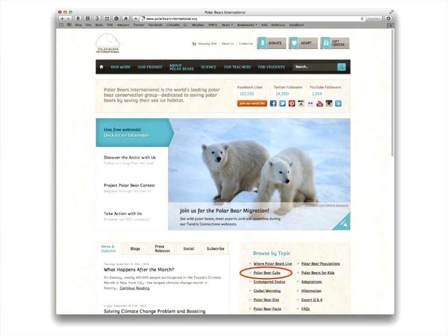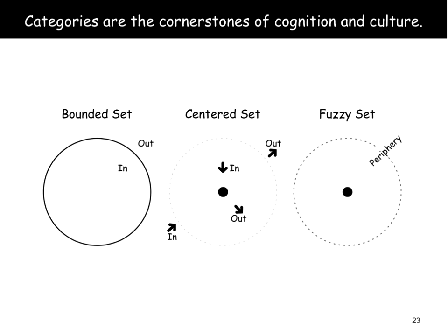So in this case, 'browse by topic' is not a label that really captures people's imagination. But 'polar bear cubs' — that's an example of surfacing sample subcategories that really resonate with people, and that particular link is a very popular one on the site. As information architects, we do a lot of work with categories on websites. But I would argue that there are opportunities to go deeper with categories. I think that categories really are the cornerstones of cognition and culture. The way that we categorize or classify in our minds shapes how we think and what we believe, individually and as groups. The default way we categorize information uses bounded sets — a simple way of thinking about things as either in or out of a category.